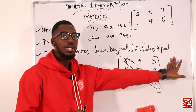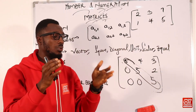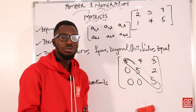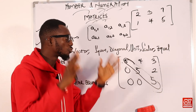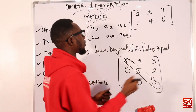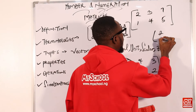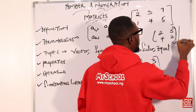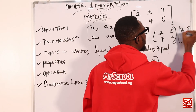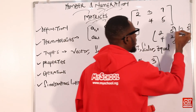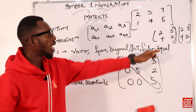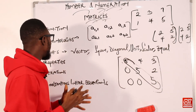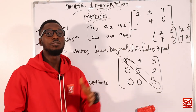For equal matrices, when you pick up two matrices they have the same dimensions and the same elements positioned in the same spots. For example, if I have two, four, five, two and another matrix also has two, four, five, two — those account for equal matrices.